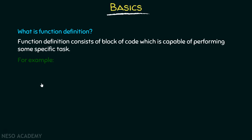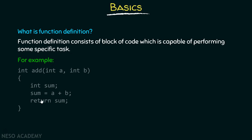For example, here is the block of code which can perform the addition between two numbers available inside these two variables a and b. This is a function definition — here is the function, and here is the block of code which can perform some specific task.